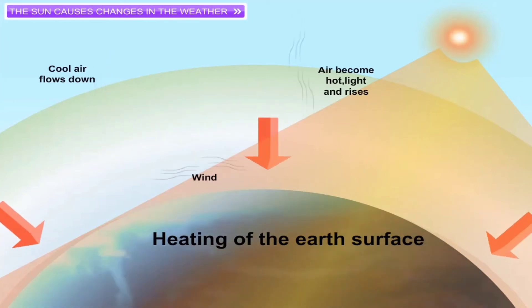Air from high pressure area moves towards the low pressure area. This moving air is called wind. So, it is the sun's heat which causes the wind to blow.